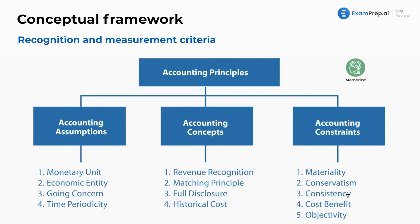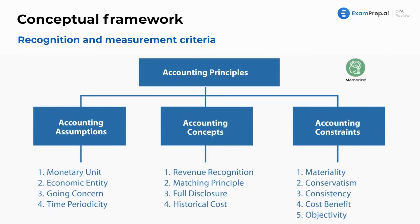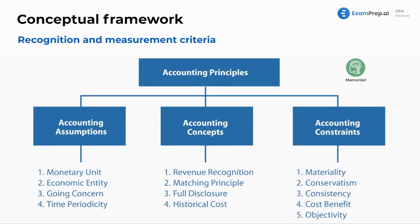Cost-benefit is about making sure that anything we're taking the time and paying our staff accountants to prepare for the financial statements is worthwhile putting in there. Objectivity means being free from bias. You'll notice there are a lot of similarities between these concepts — just good overall concepts to be familiar with.